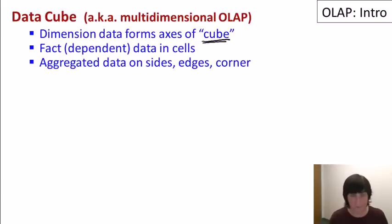So we have our dimensions forming the axes of our cube. And then the cells of the cube, again you can think of it sort of like cells of a spreadsheet, are the fact data or the dependent data. Like in the previous example, that would be our quantity and price. And finally, we have aggregated data on the sides, edges and corners of the cube. Again, similar to how you might aggregate columns in a spreadsheet. So let's go ahead and I'll do my best to draw a picture to explain what's going on.